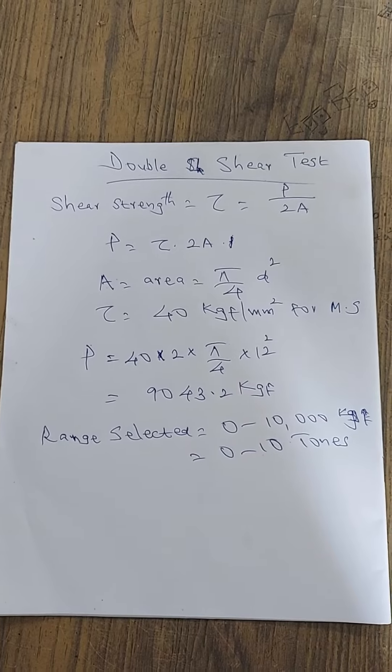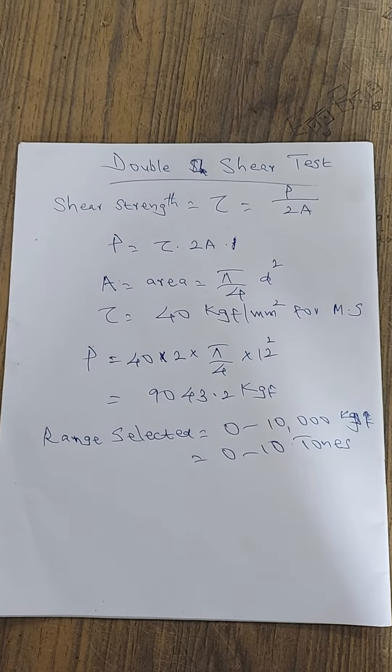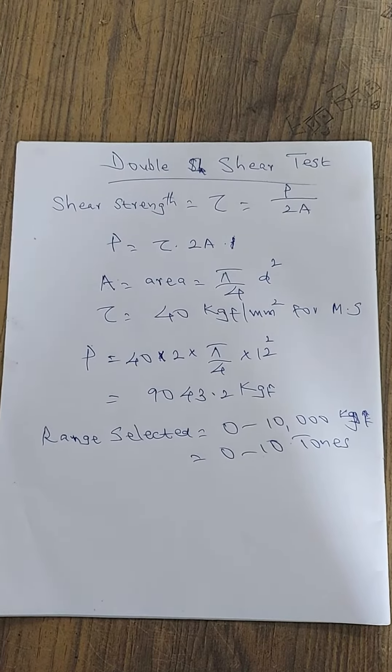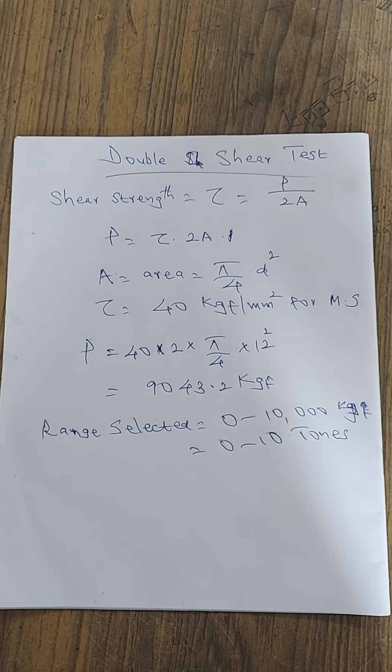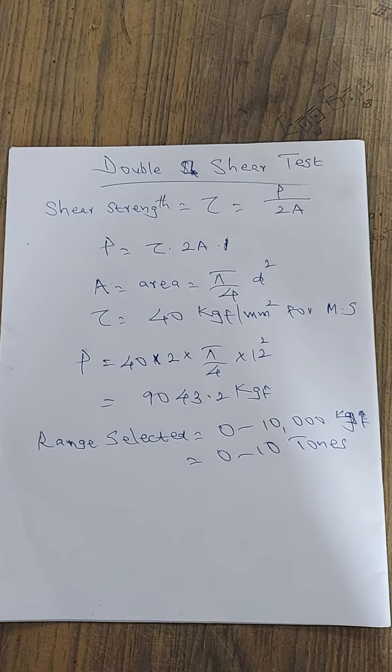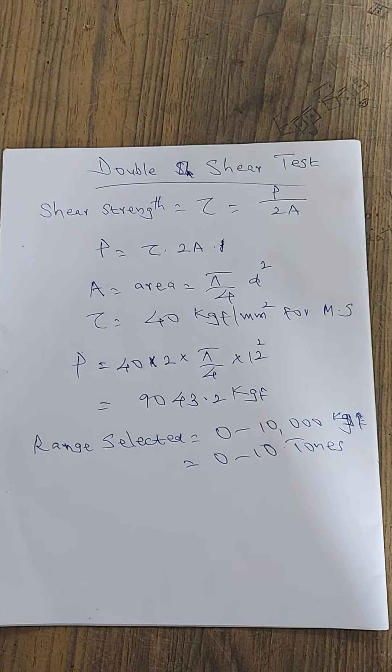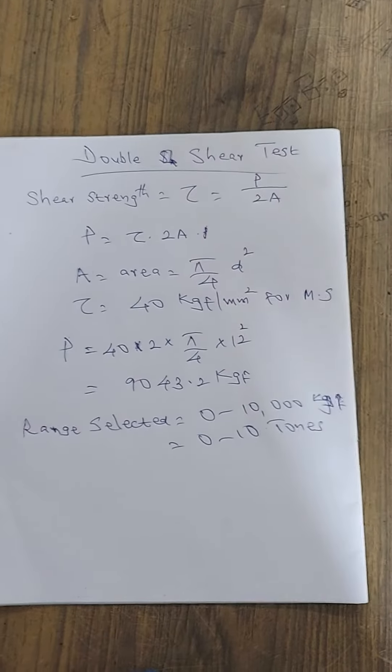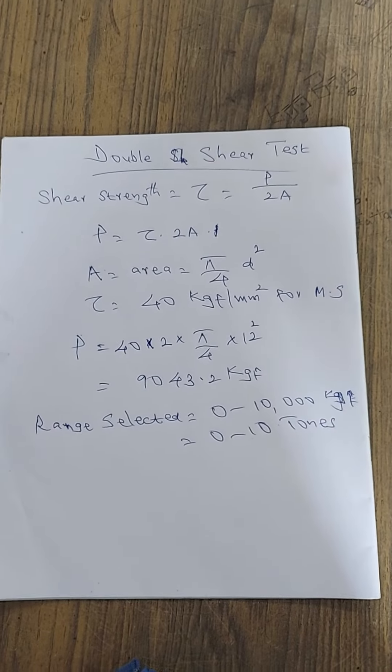The area is the cross-section of the specimen. So shear strength tau equals P by 2A is the equation for determining the shear strength. P is the load at which the failure occurs, tau is the shear strength for the material of the specimen, and A is the area of cross-section.